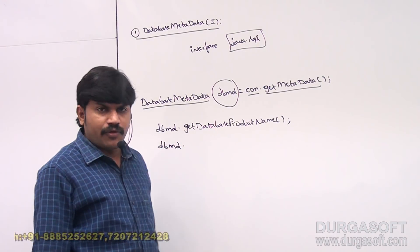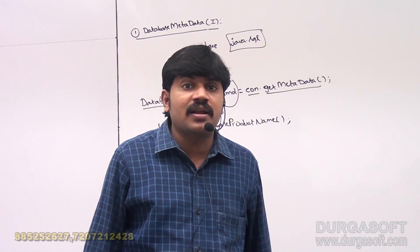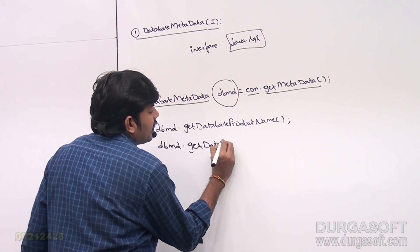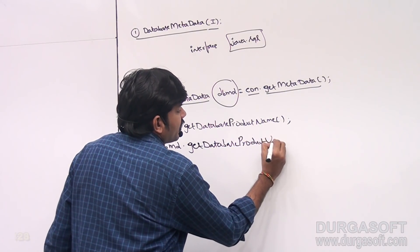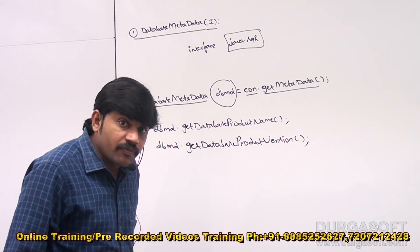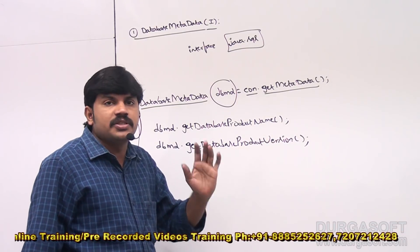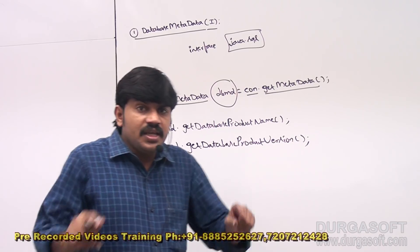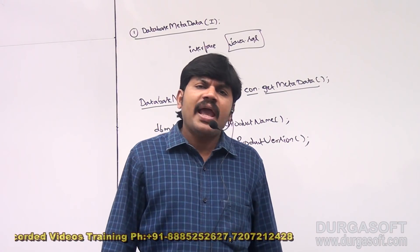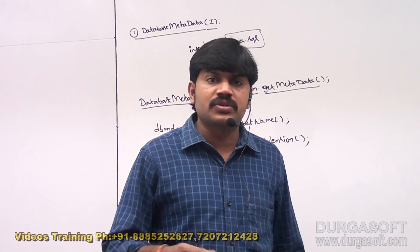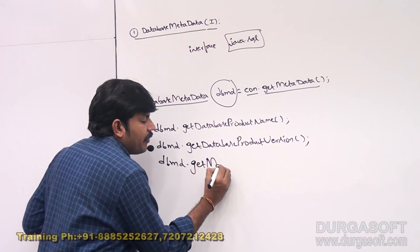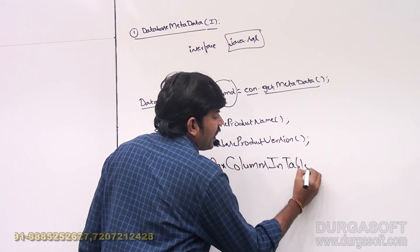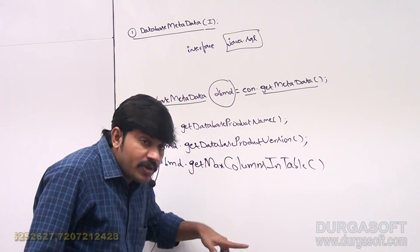To find out the database version — for example whether Oracle is 10g, 11g, or 12c — we call dbmd.getDatabaseProductVersion(). To find out the maximum number of columns allowed inside a table, we call dbmd.getMaxColumnsInTable().